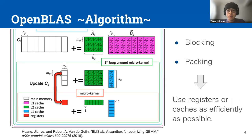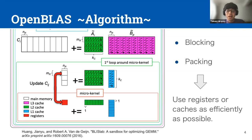OpenBLAS uses blocking and packing techniques to speed up processing by using registers and caches as efficiently as possible. Blocking is done with register and cache size awareness in order to increase register and cache utilization and reduce access to main memory as much as possible. Packing techniques also arrange data in a contiguous manner in memory, which simplifies memory access patterns and reduces the cache miss rate.